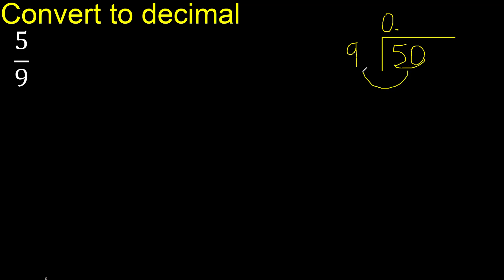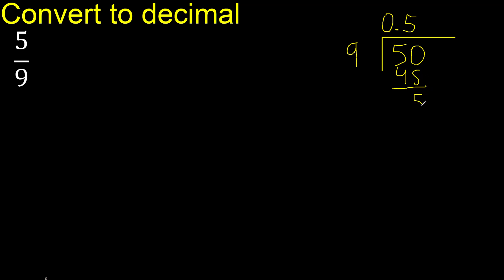50 is not less. With 50 and 9, multiply by which number is nearest to 50 but not greater. 9 multiplied by 6 is 64 — it's greater. Multiply by 5 is 45 — it's not greater. 50 minus 45 is 5.